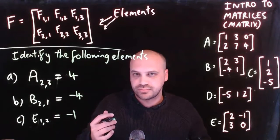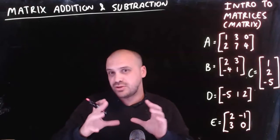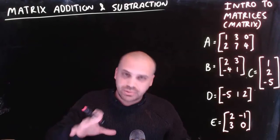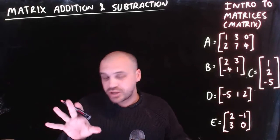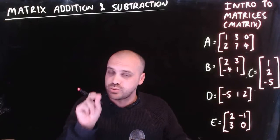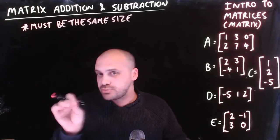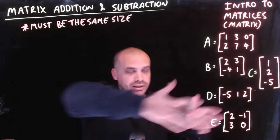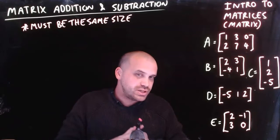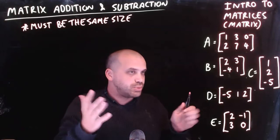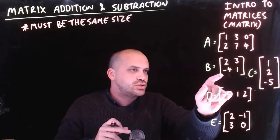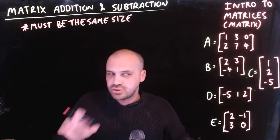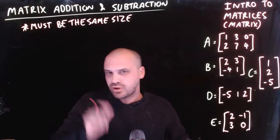You can treat matrices like numbers in that you can add them, subtract them, and multiply them together. The rules are kind of similar but change a little bit. For addition and subtraction it's really straightforward, but there is one rule: if you're going to add two matrices together, they must be the same size. From my list, the only two matrices I can add together are B and E, since both are 2 by 2.